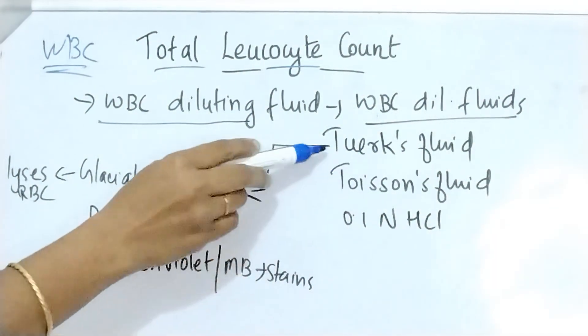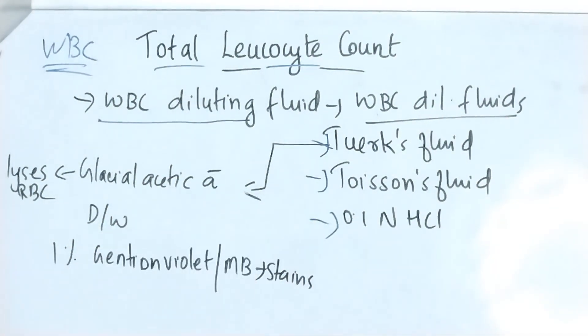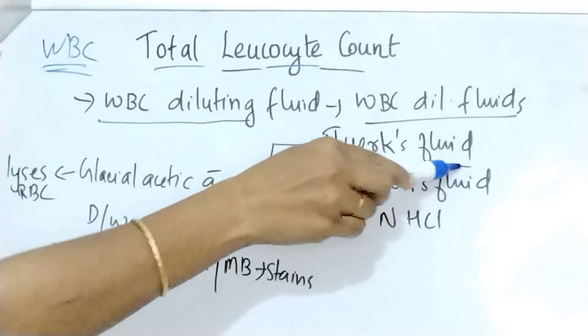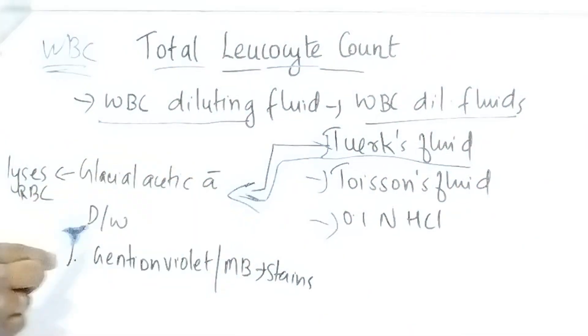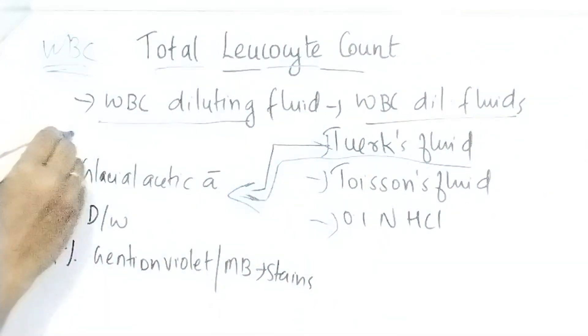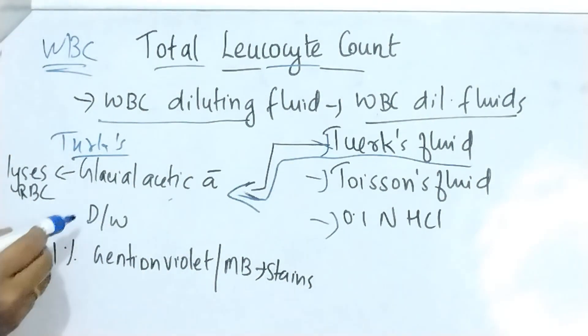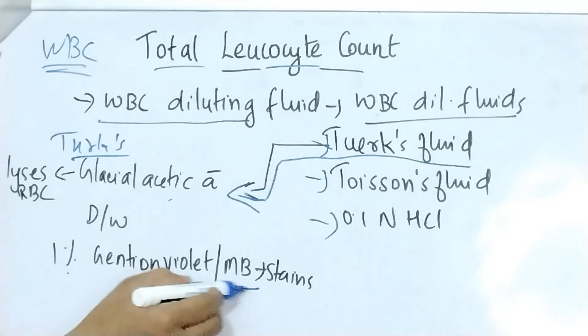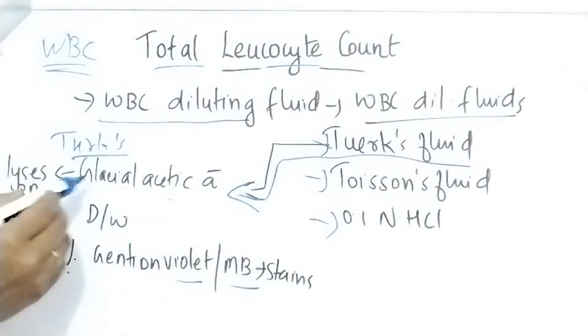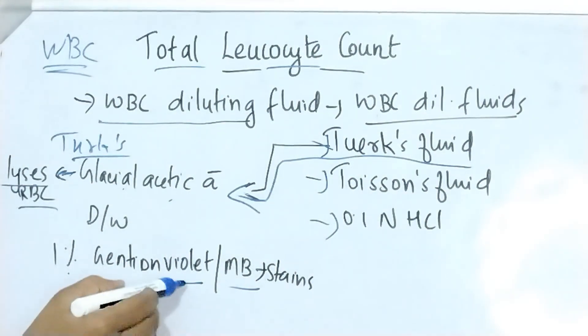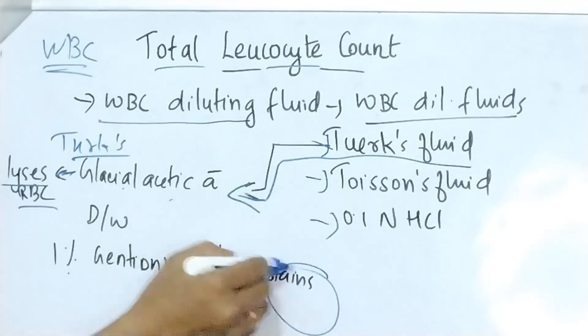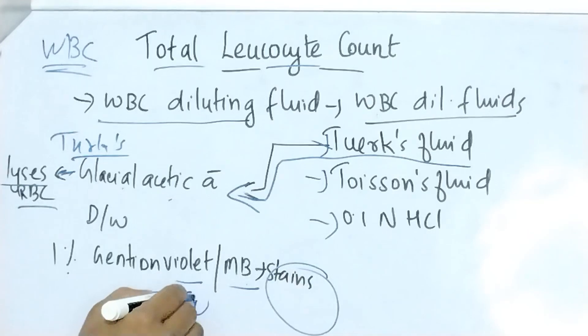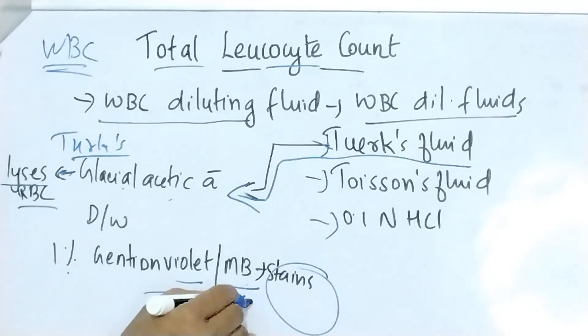WBC diluting fluids are Turk's fluid, Toisson's fluid and 0.1 normal HCl. Turk's fluid is the common fluid which is used for WBC count which contains glacial acetic acid, distilled water and 1% gentian violet or methylene blue. Here, glacial acetic acid lyses RBCs and gentian violet or methylene blue stains the nucleus of WBCs.